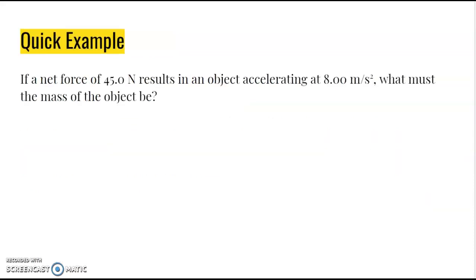Quick example: if we have a net force of 45 newtons and the object accelerates at 8 meters per second squared, what is the mass? Using net force equals mass times acceleration, rearranging gives mass equals net force divided by acceleration: 45 newtons divided by 8 meters per second squared equals approximately 5.6 kilograms.